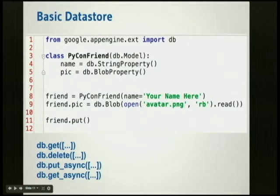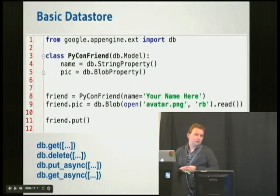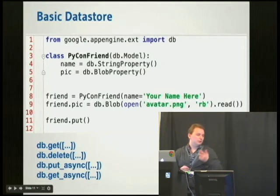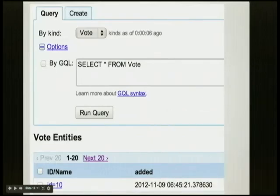The data store is really simple. You can define your models — in this case, I define a PyCon Friend model with a name (a string property) and a picture. From anywhere in your app, for example in a controller, you can make a new instance, set a name, set a picture, and just call friend.put() to save it to the data store. There are also methods to get and delete entities, and you can save and get asynchronously. You can also browse your data store and write GQL — for example, exploring the vote entity and listing all of them.